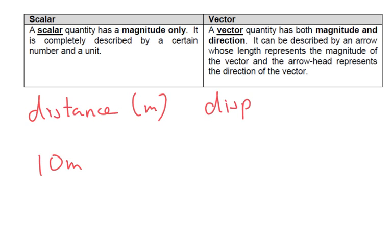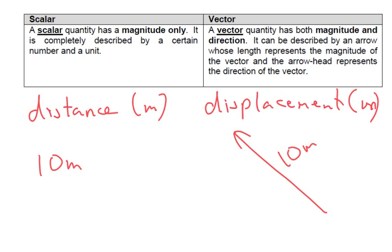So, displacement, also measured in meters, but it's going to tell me the direction. So, maybe I walked this direction, 10 meters. So, I started off here and I ended up here. And then the length of the arrow represents how far I've gone.